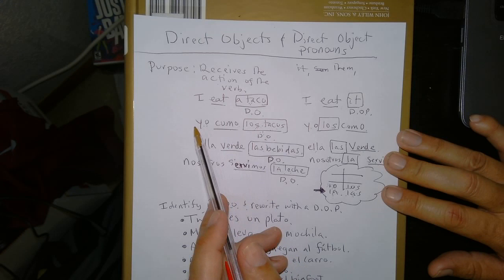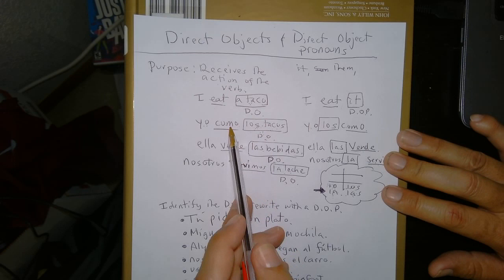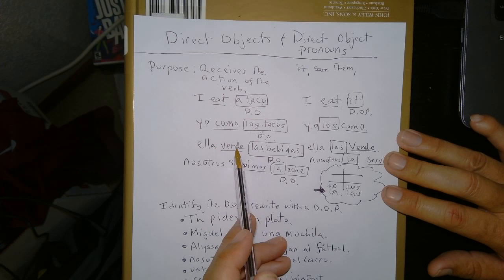It receives the action. So yo como los tacos. There's a good sentence in Spanish. It's the same as this in English. Los tacos would be what are being eaten. So that would be the direct object.